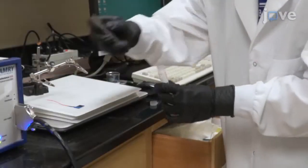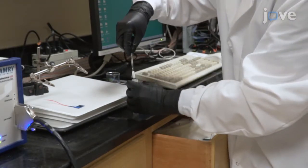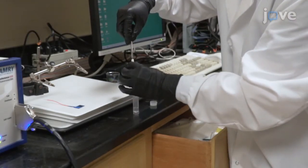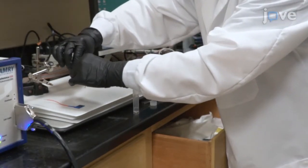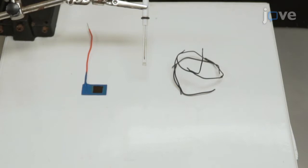To perform a tribo-corrosion test, collect the prepared aluminum sample, a standard silver-silver chloride electrode, and an activated titanium mesh for use as the working, reference, and counter-electrodes respectively.